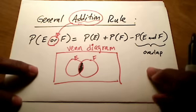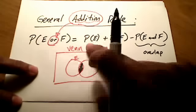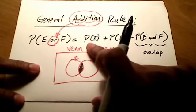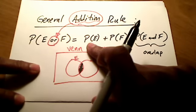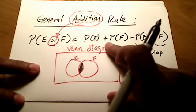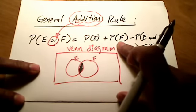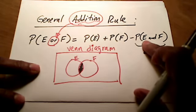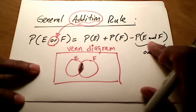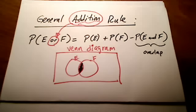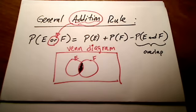So the general addition rule basically says: find the probability of E, add that to the probability of F, and take away the probability of E and F — that's where they overlap with each other.